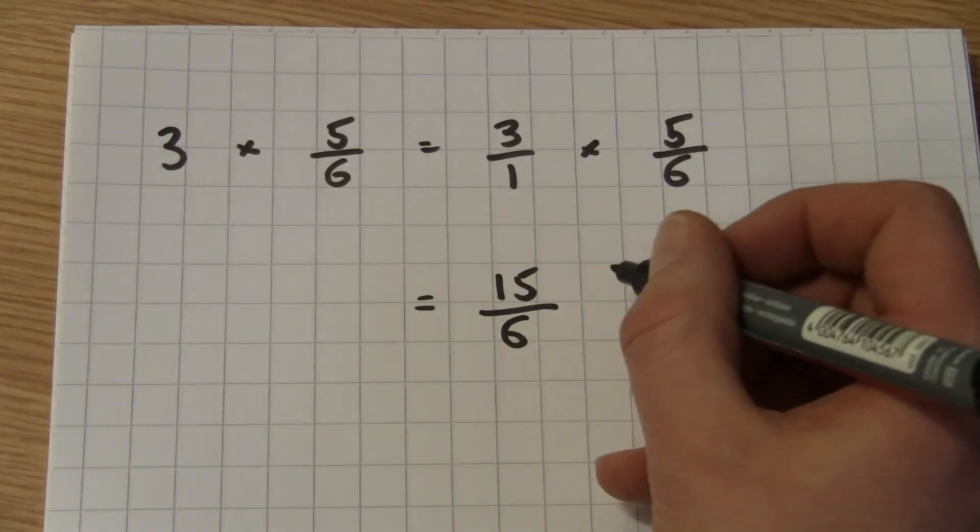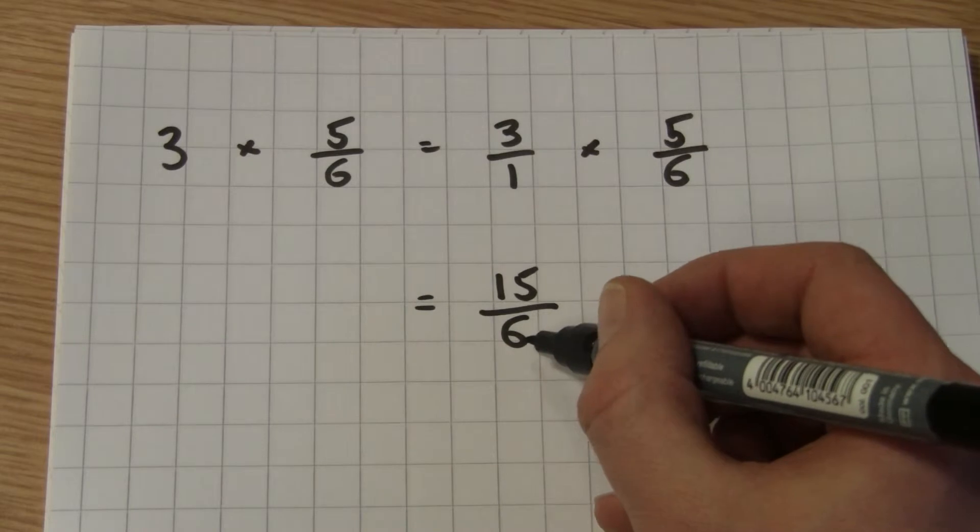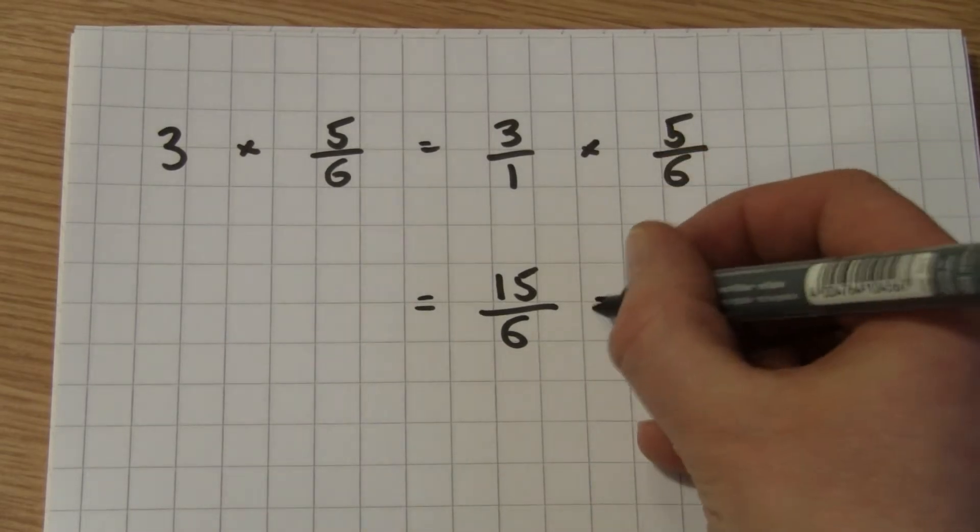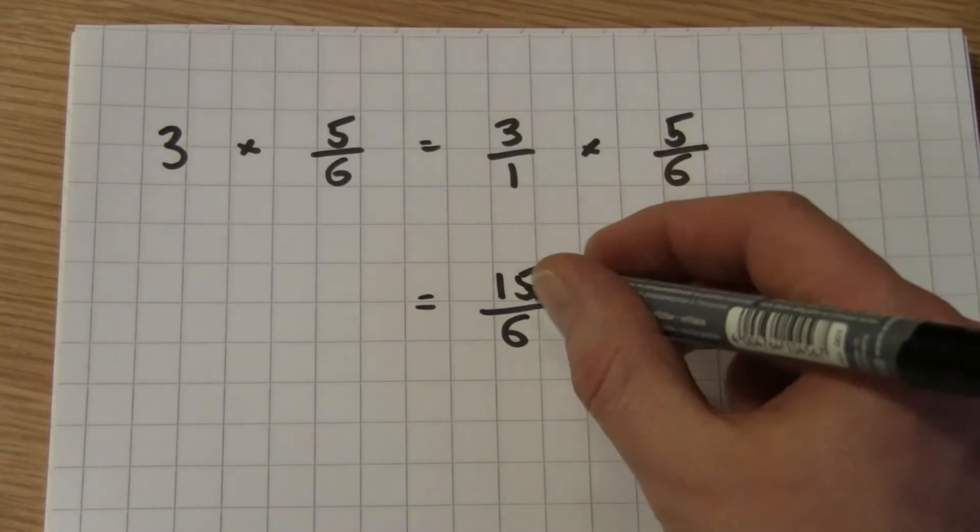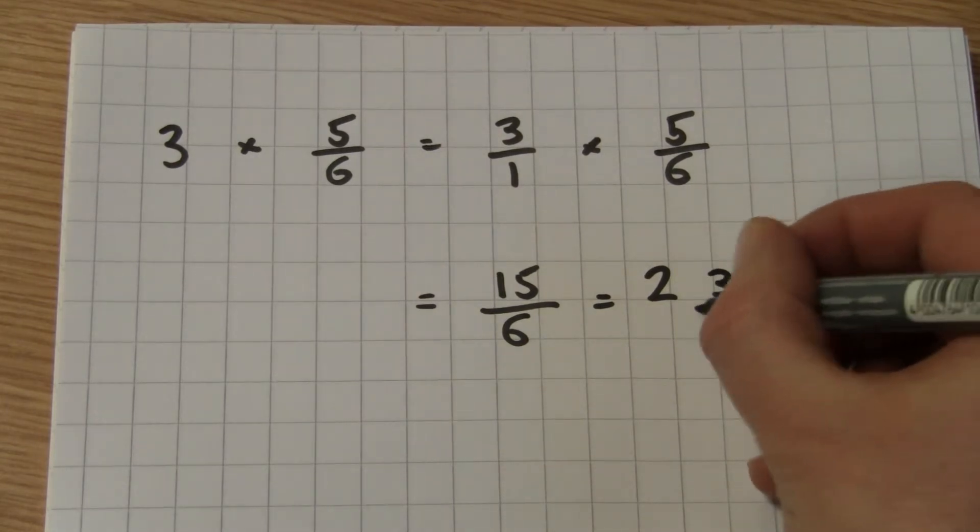However, this is an improper fraction, so we need to convert it to a mixed number. How many 6s are there in 15? Well, there are 2. And what does that leave us with? That leaves us with 3/6.